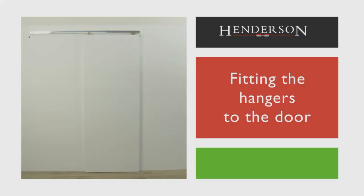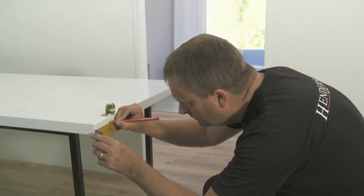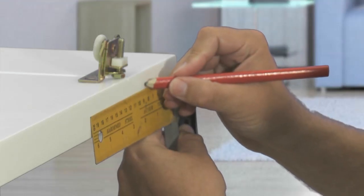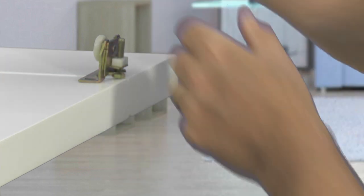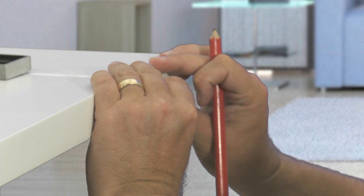Fitting the hangers to the door. Firstly we need to attach the hardware to the door. Start by marking out the two hanger positions from each edge of the door. There are two distances depending on the width of the door to be hung.